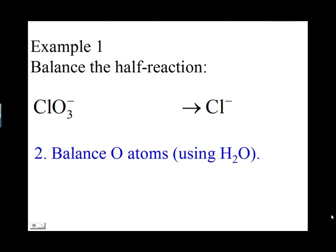The next step is to balance oxygen atoms. On the left side there are three oxygen atoms in the ClO3⁻ ion, and on the right side there are no oxygen atoms yet. You must add three oxygen atoms to the right side by adding three molecules of water. There are now three oxygen atoms on both sides.